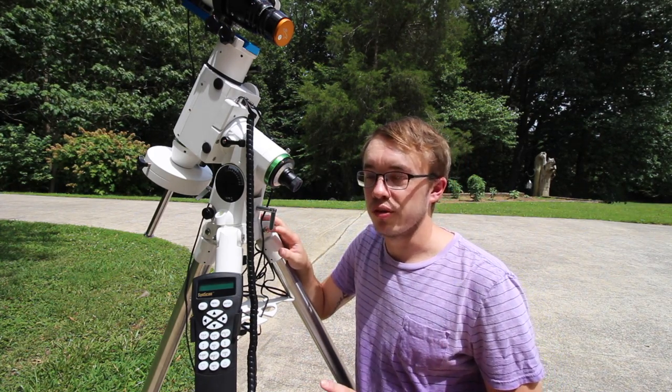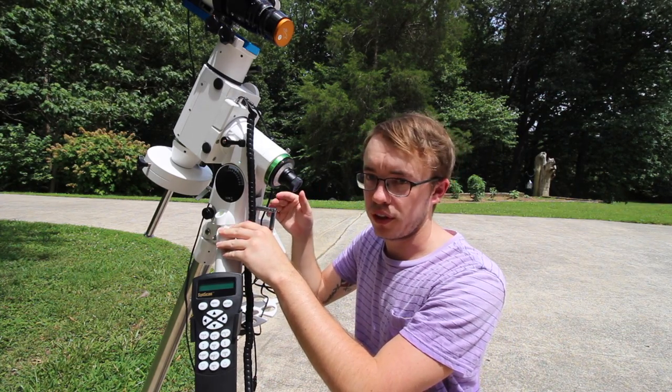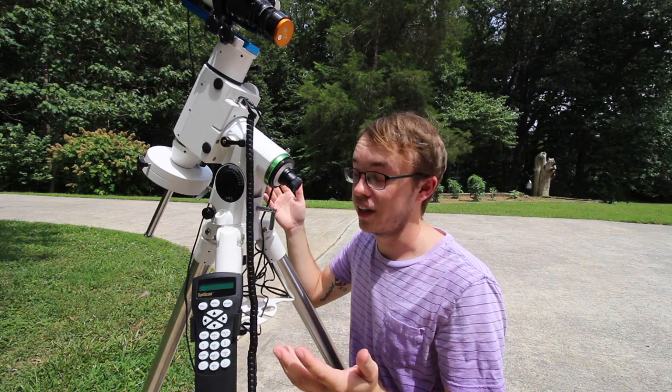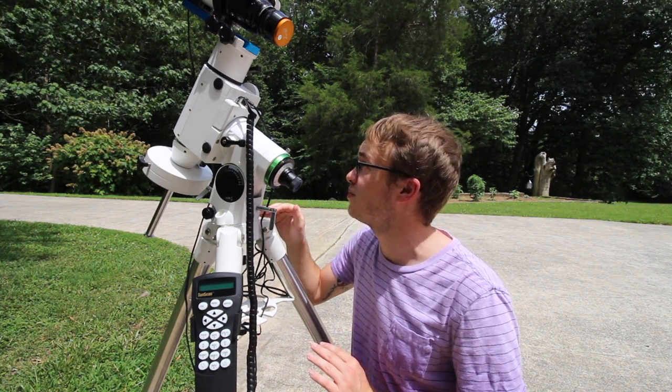For this tutorial I'm actually just going to leave the mount off, because the only difference with me turning it on is the scope is going to be lit up. Since it's daylight out, I want you guys to be able to see through the scope as best as you possibly can.